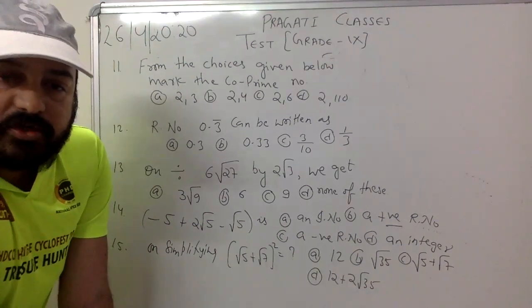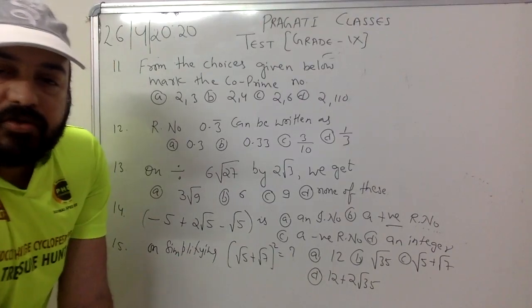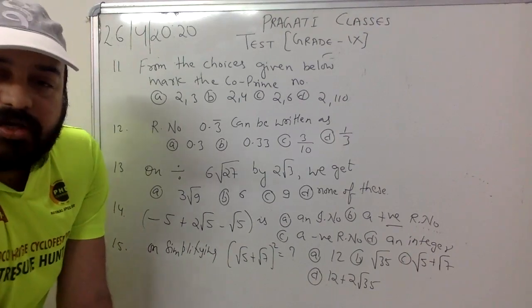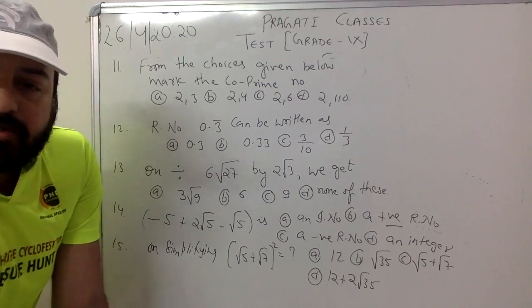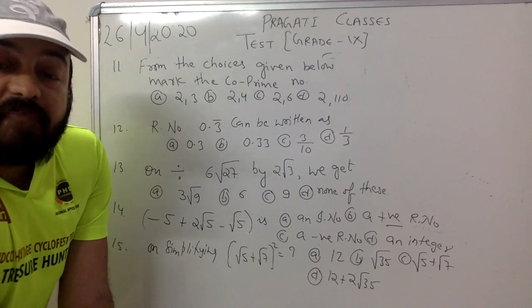And the last of the maths questions for today. On simplifying root 5 plus root 7 whole square: option A 12, option B root 35, option C root 5 plus root 7, and option D 12 plus 2 root 35.